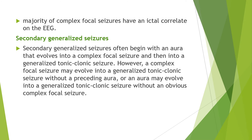The majority of complex focal seizures have an ictal correlate on the EEG. Secondary generalized seizures often begin with an aura that evolves into complex focal seizures and then into generalized tonic-clonic seizures — three stages: aura, complex focal seizures, and generalized tonic-clonic seizures. However, a complex focal seizure may evolve into generalized tonic-clonic seizures without a preceding aura, or an aura may evolve into generalized tonic-clonic seizures without an obvious complex focal seizure.